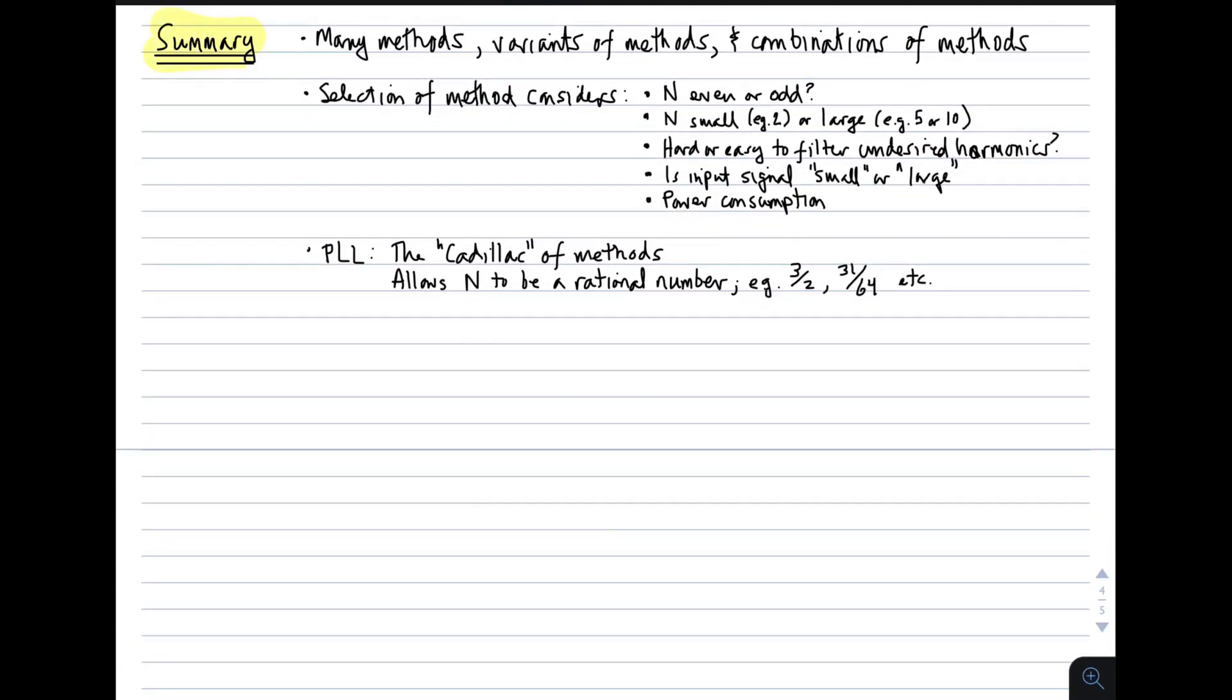So, finally, a summary of frequency multiplication. There are many methods. Furthermore, there are many variants of the methods that I've shown you, and there's many combinations of methods that are used commonly. The selection of the method for your particular application depends on the number of considerations. For example, is n even or odd? We've seen some methods are better for even, some are better for odd. Is n small, like 2, or is it large, like 5 or 10? That may determine your choice of method. Is it hard or easy to filter the undesired harmonics? So, whatever method you propose as a candidate method, you need to consider how easy or hard it's going to be to get rid of all the other harmonics being generated by this method. You need to consider whether the input signal is small or large. Some of these methods require devices to operate as switches, and that's usually easier if the input signal is large. If that's not possible, then you need to consider a method where the input signal can be smaller. For example, the clipping method.